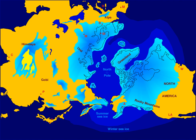The Baltic Sea and the Great Lakes of North America were formed primarily in this way. The numerous lakes of the Canadian Shield, Sweden, and Finland are thought to have originated at least partly from glaciers' selective erosion of weathered bedrock.